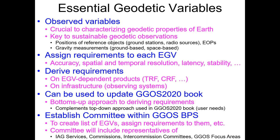The idea is to adapt this concept of an essential variable to the geodetic community's needs — to define a set of essential geodetic variables. Following what these other communities have done, we could consider an essential geodetic variable to be an observed variable that's crucial to characterizing the geodetic properties of the Earth and that are key to sustainable geodetic observations. For example, you might consider the position of some reference object like a ground station or a radio source to be an essential geodetic variable. Certainly Earth orientation parameters should be considered essential geodetic variables, as should gravity measurements, either ground-based or space-based.